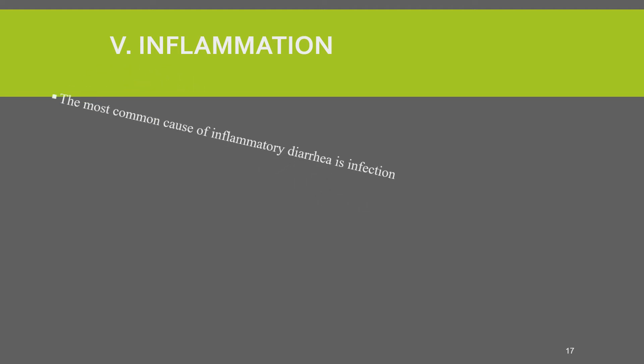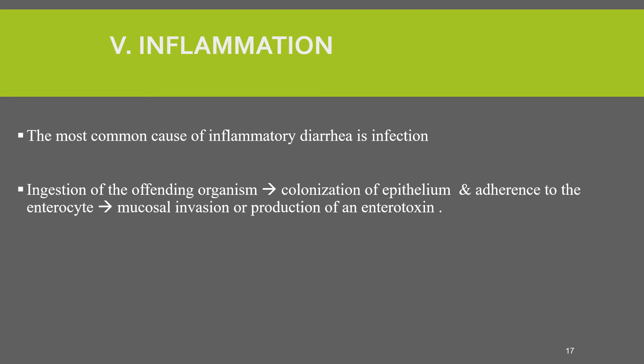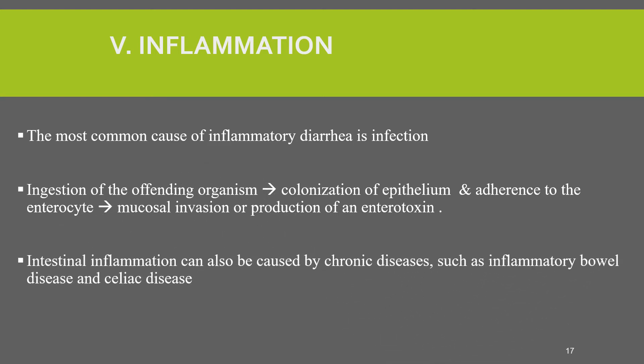The fourth and final mechanism of diarrhea is inflammation. The most common cause of inflammatory diarrhea is infection. Ingestion of the offending organism causes colonization of the epithelium and adherence to enterocytes, leading to mucosal invasion or production of an enterotoxin. Intestinal inflammation can also be caused by chronic disease such as inflammatory bowel disease and celiac disease. Most of the time inflammatory diarrhea causes bloody diarrhea.